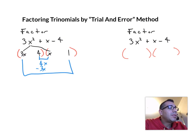So now we could throw our signs in. We know that this one must be negative because 3x times -1 gives me -3x, and then this 4 is going to be positive. We have found our factors.